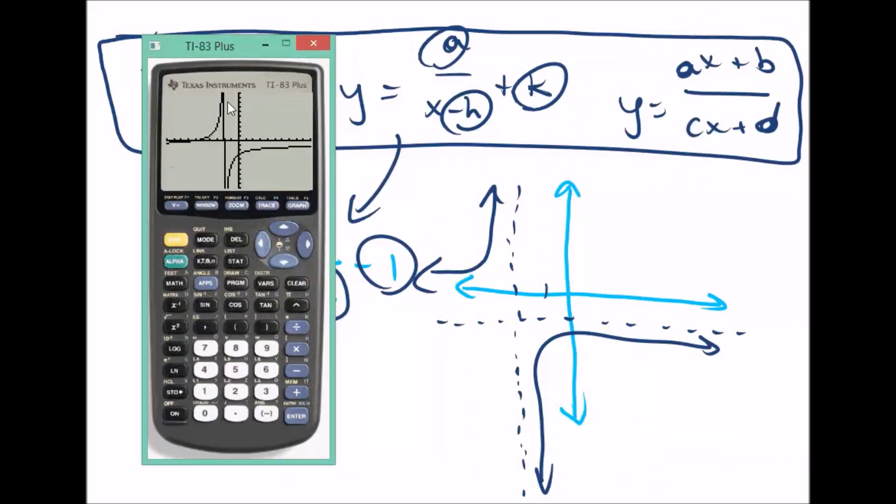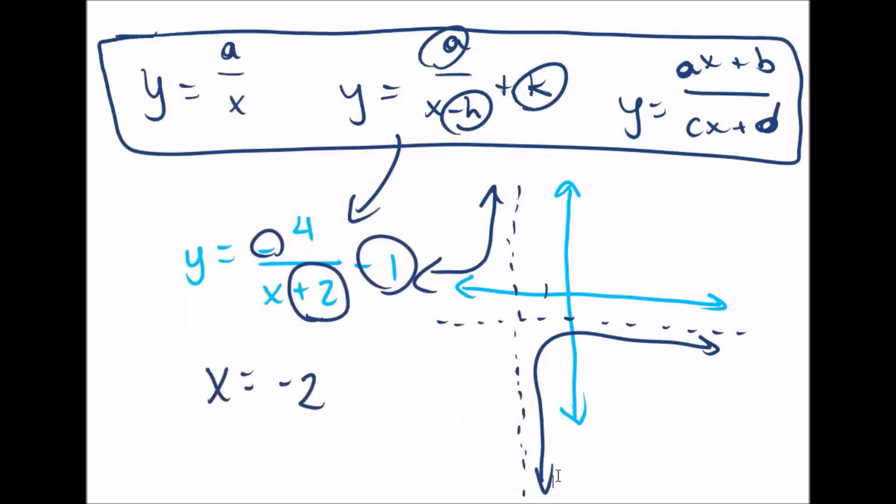There's something up here in the top left, and something down here in the bottom right. And the asymptotes are x equals negative two, and y equals negative one.